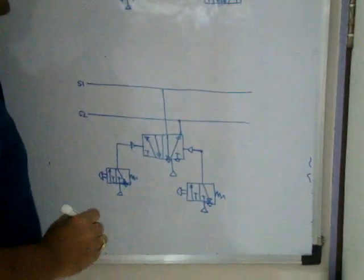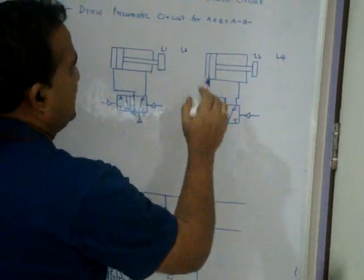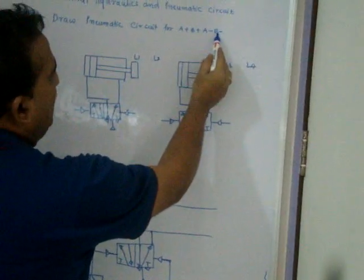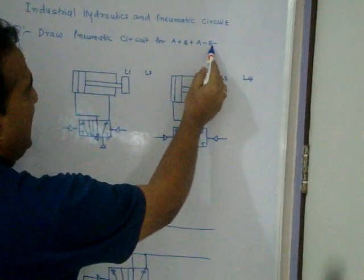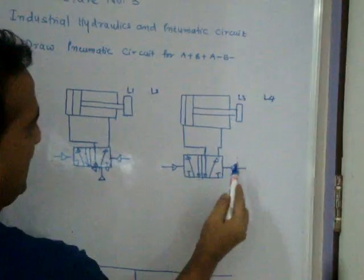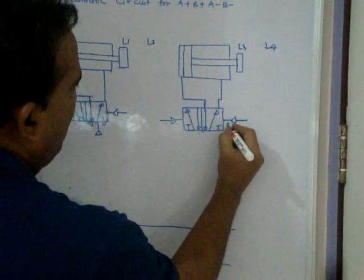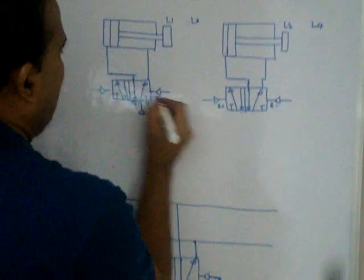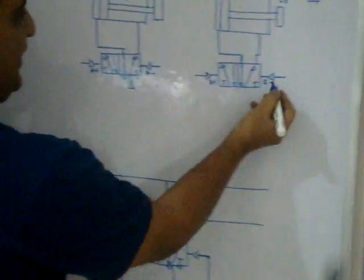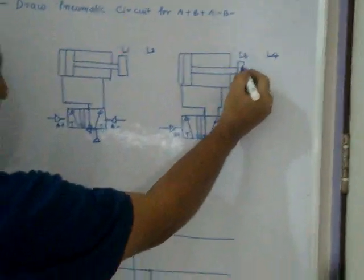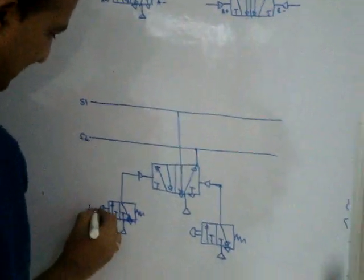In major problems, B minus comes last. B minus means the piston returns. After B minus, the piston goes to position L3. So you take L3 as the reference for the next step. In 90% of problems, whenever B minus is there, you identify where the piston ends up — it comes to L3.